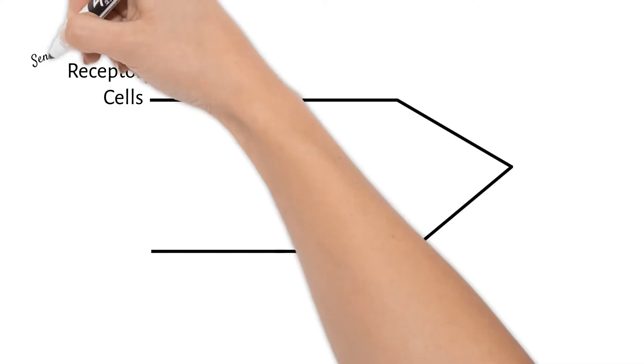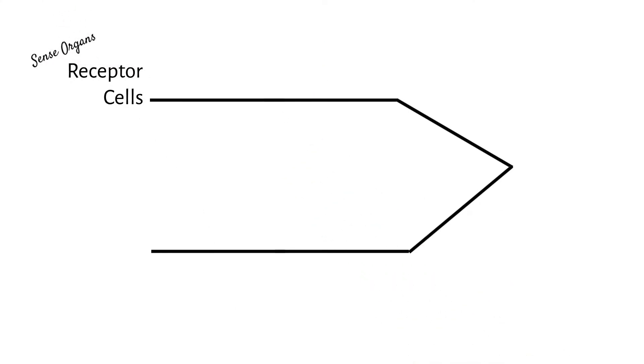The nervous system receives information through receptor cells. Receptor cells are specialized neurons that take in the information. They're found in your sense organs, so your skin, your eye, your tongue, and so on.